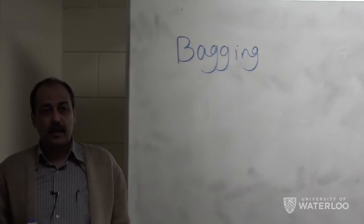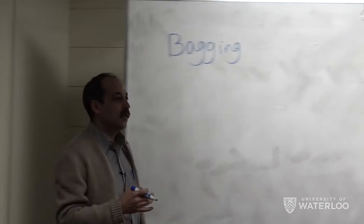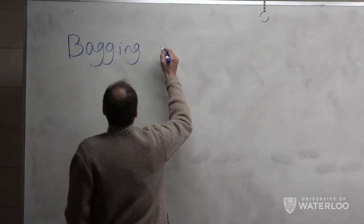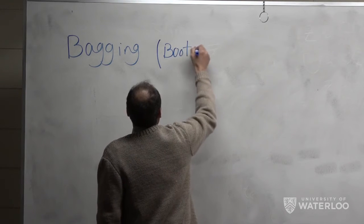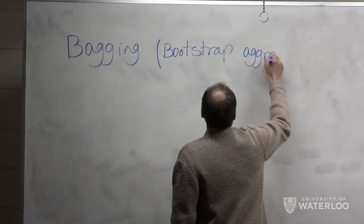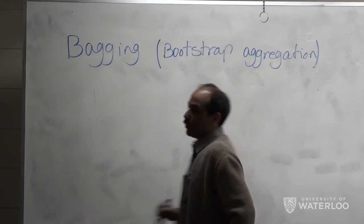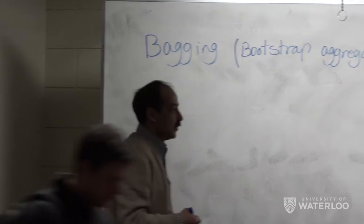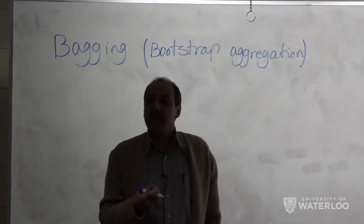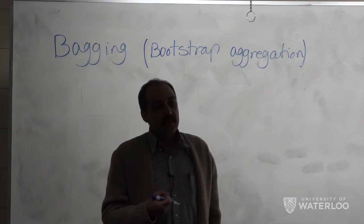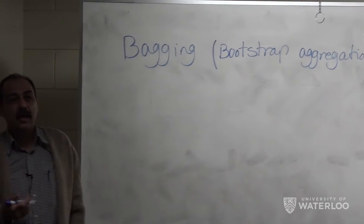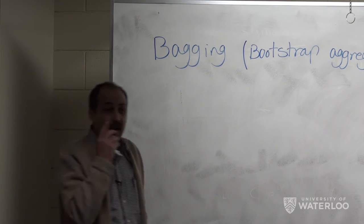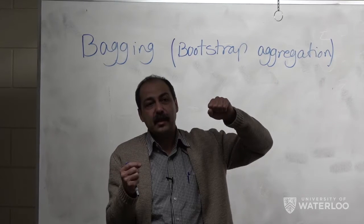We learned about boosting in the previous lecture. In boosting, we learned that we can take a weak classifier and boost it to a pretty good classifier. Bagging, which is the short form of bootstrap aggregation, is a meta-method — it's not a classification technique itself. It's a method you can apply on any classifier, used mainly to reduce the variability of classifiers. Any method with high complexity has the same problem.